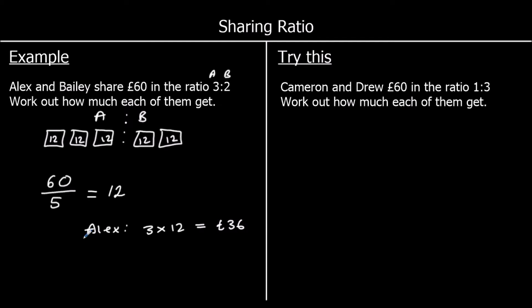And Bailey has got two lots of 12, and that's £24. So Alex gets £36 and Bailey gets £24.